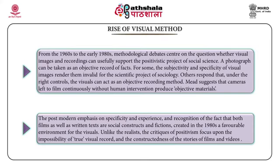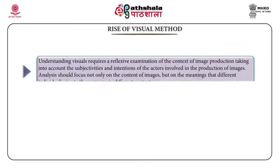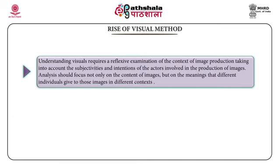The postmodern emphasis on specificity and experience, and the recognition that both films and written texts are social constructs and fictions, created in the 1980s a favourable environment for visuals. Unlike realists, the critiques of positivism focus upon the impossibility of a true visual record and the constructedness of films and videos. Understanding visuals requires a reflexive examination of the context of image production, taking into account subjectivities and intentions of those involved. Analysis should focus not only on the content of images but on the meanings different individuals give them in different contexts.